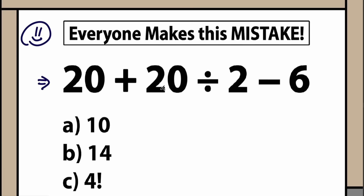We have 20 plus 20 divided by 2 and minus 6. What is the correct answer to this question?